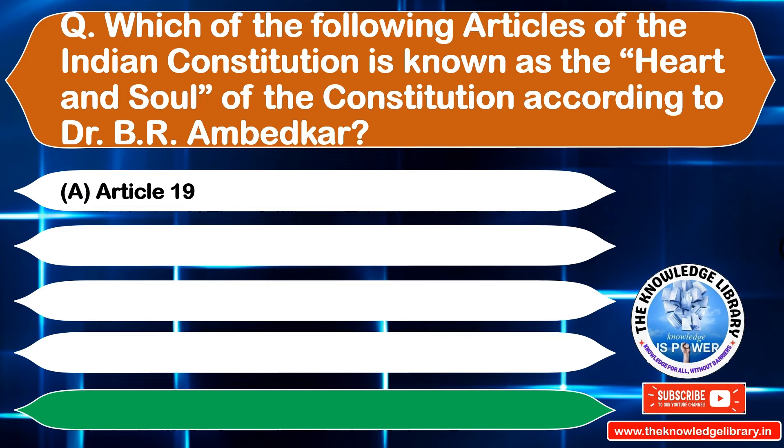The next question is: which article of the Indian Constitution guarantees the right to form associations or unions? Option A: Article 15, Option B: Article 16, Option C: Article 19, Option D: Article 21. The correct answer is Option C: Article 19.